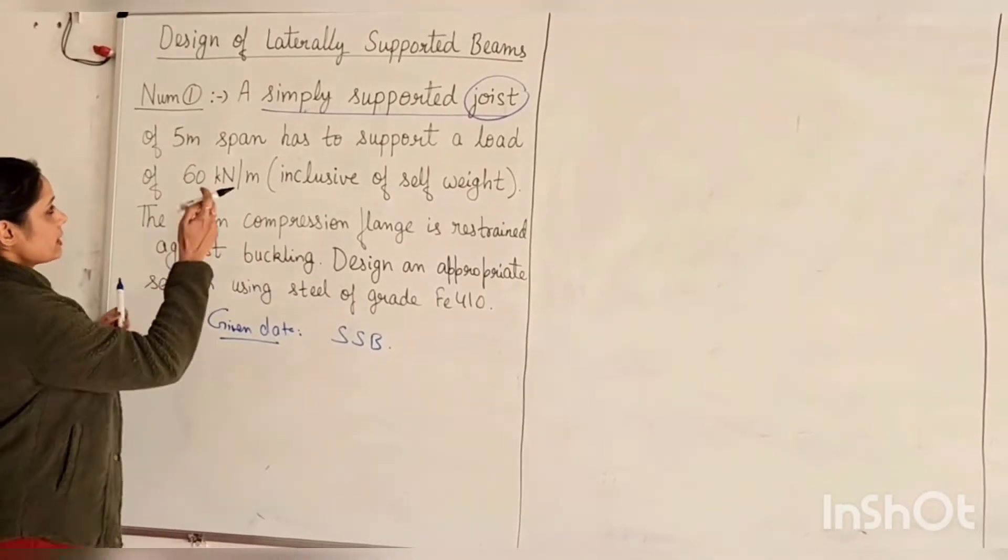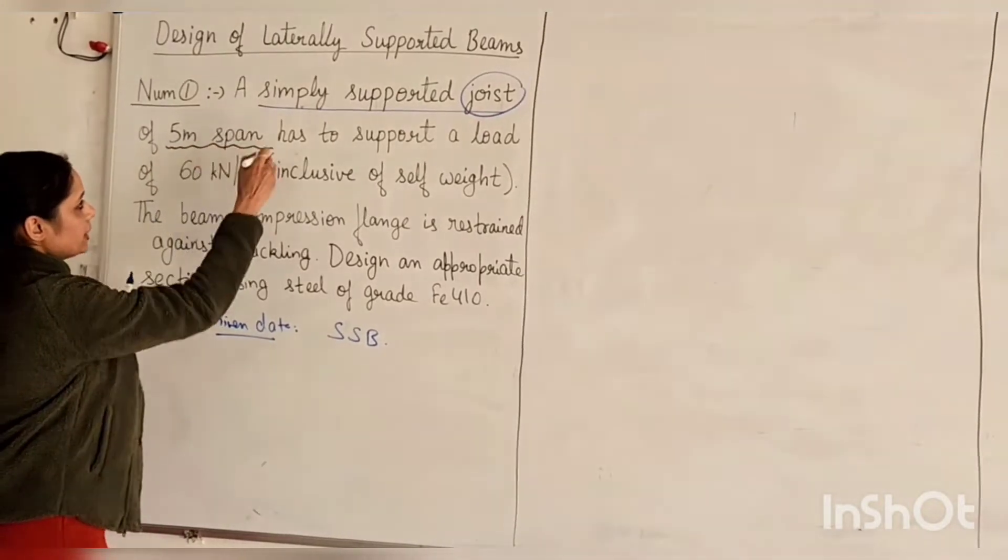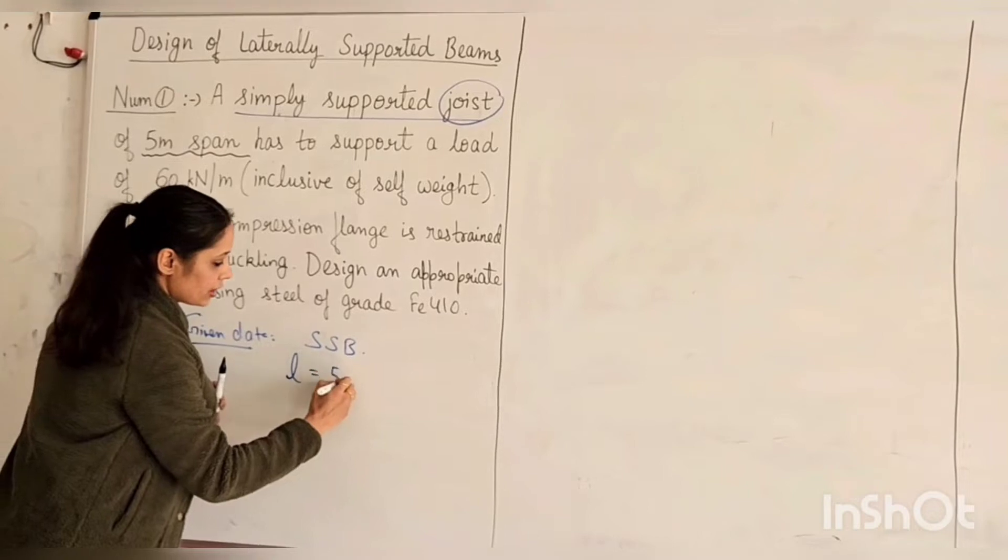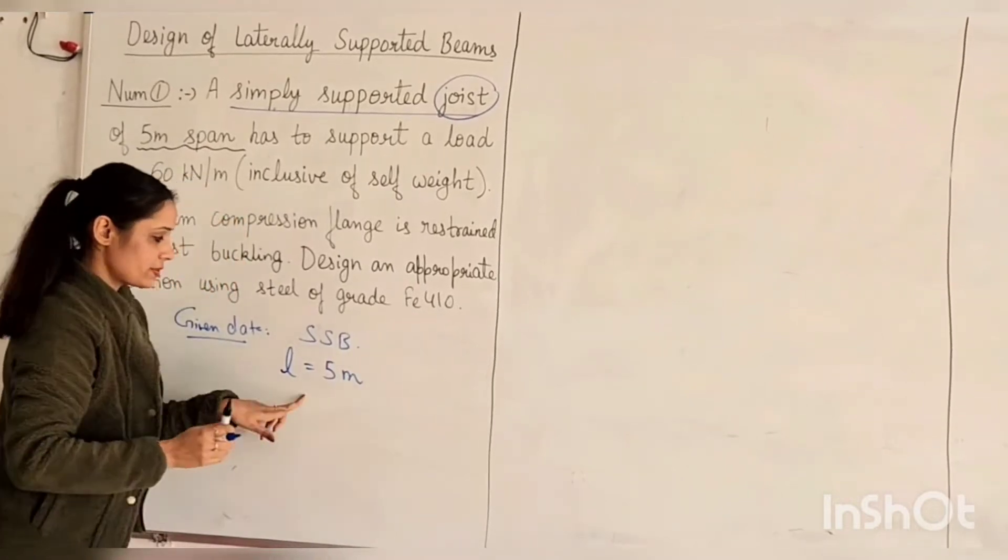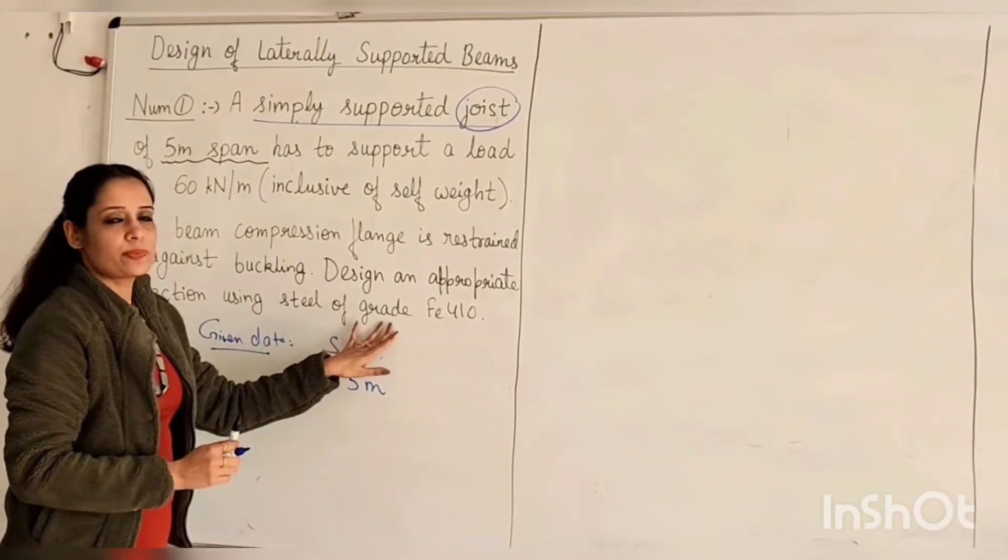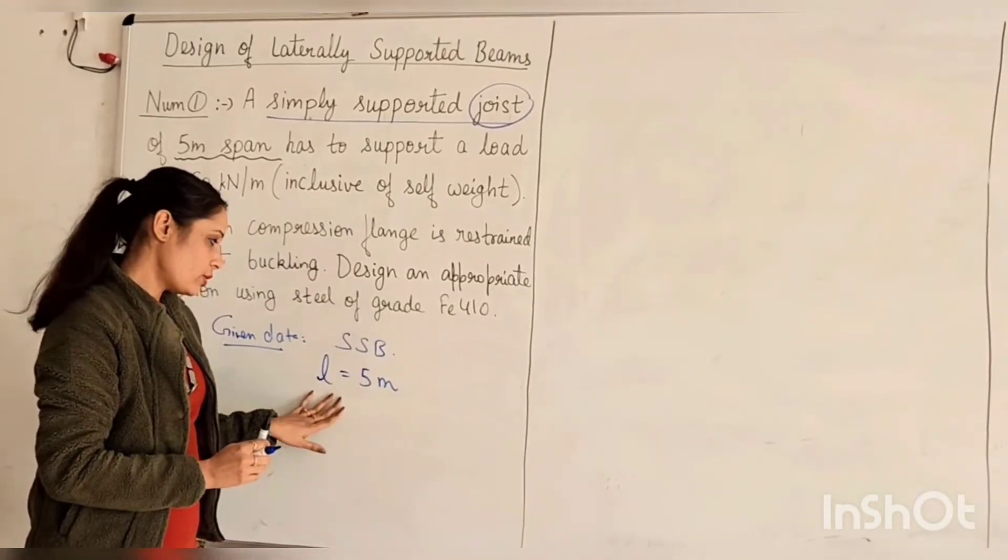After this, the span is 5 meters. So when we remove the moment, we use effective span. We use simple span and effective span, so we can solve it.